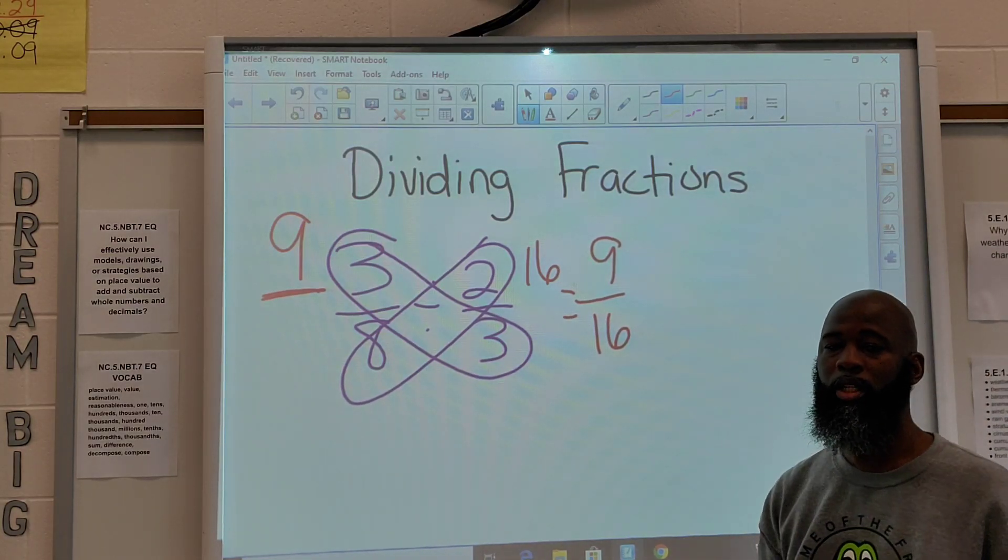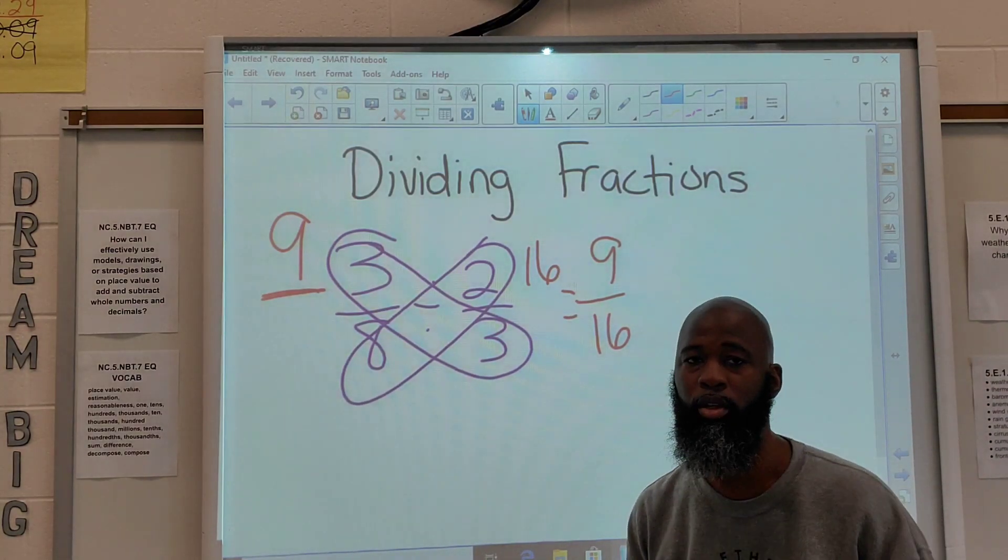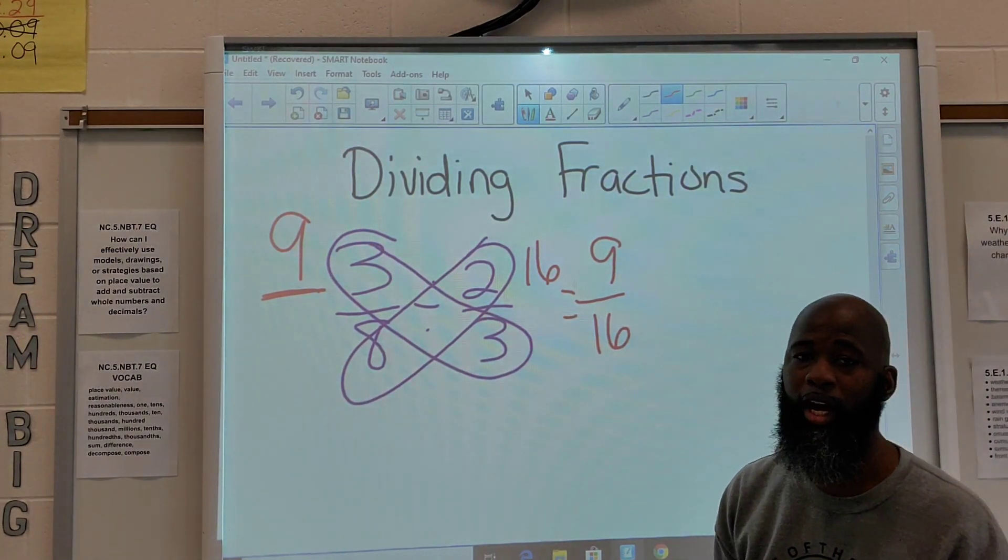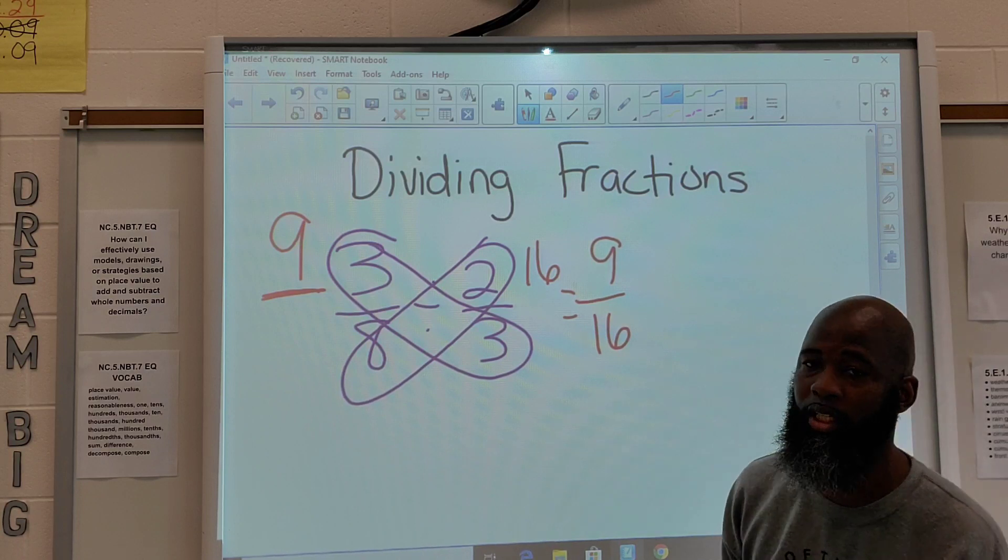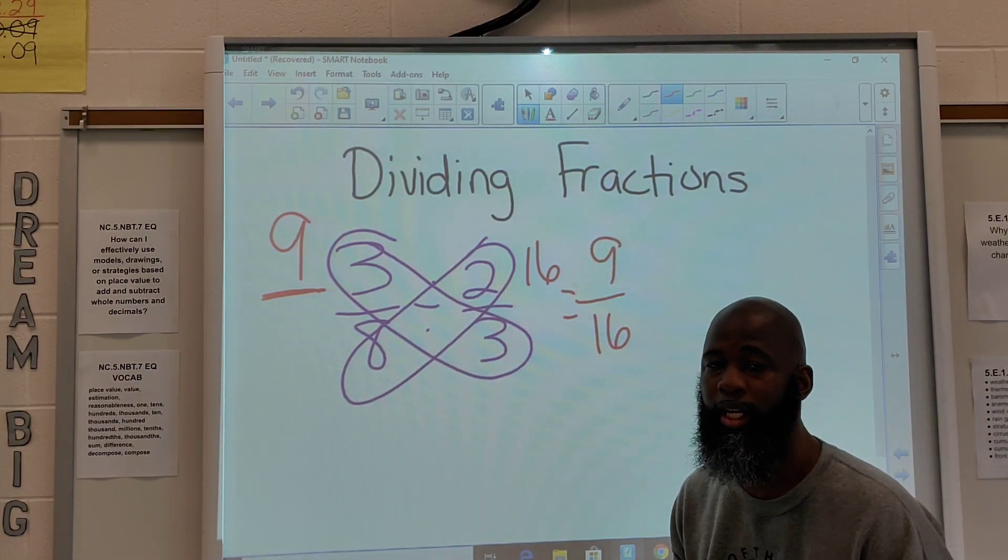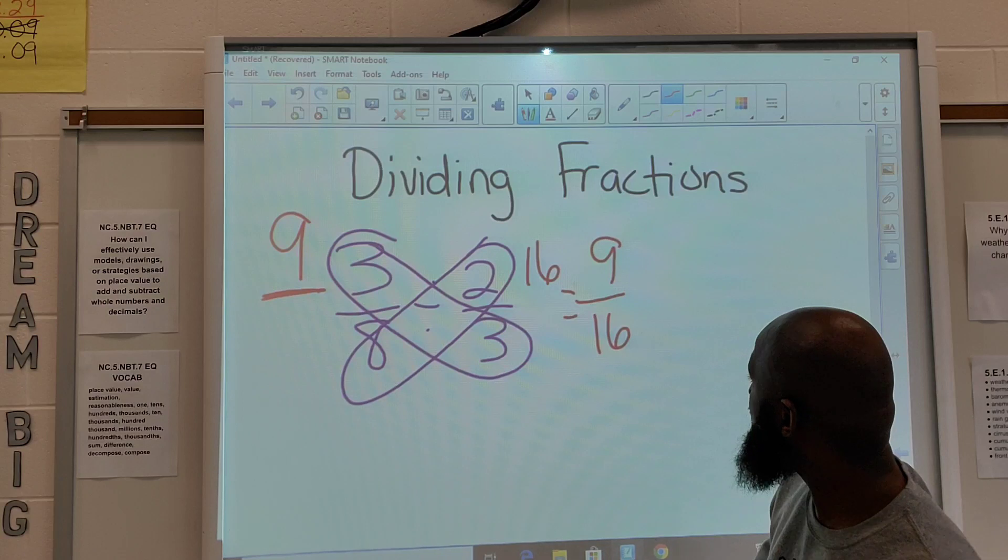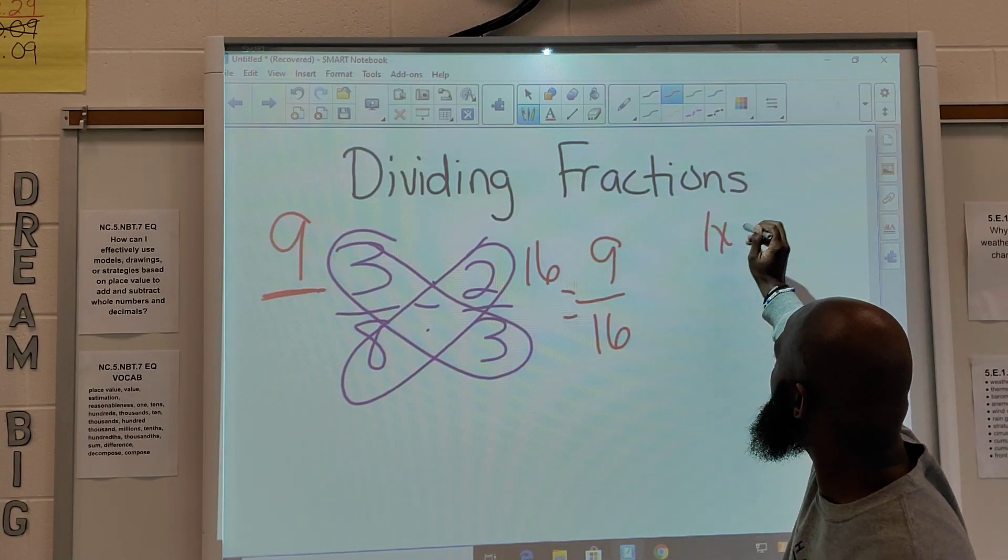Now, next thing we got to do is simplify or reduce, whichever term you like to use. So, we got to figure out what common factors greater than 1 that 9 and 16 both share. So, what numbers can we multiply to get 9? We have 1 times 9 and we have 3 times 3.